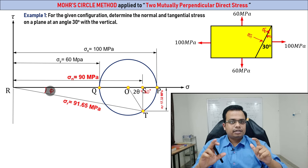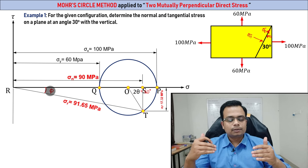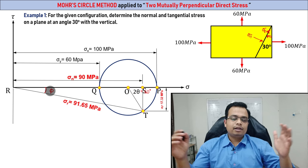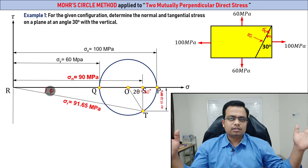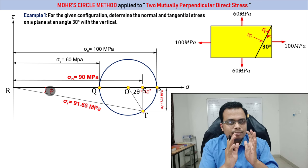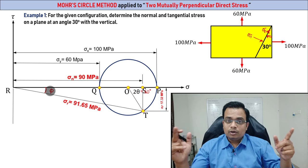Let's slightly change the problem: one stress tensile and the other compressive, and we'll keep changing the combination. By the end of this video you'll be in a position to solve problems in 10 to 15 seconds with simple pen and paper — no compass or protractor needed. Just use Pythagoras theorem. Do watch the next video too, which covers the combined case: two mutually perpendicular stresses plus shear stress.